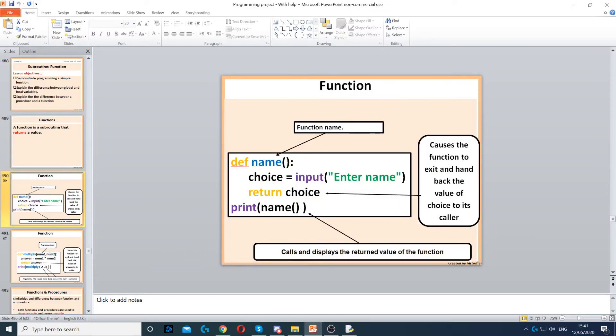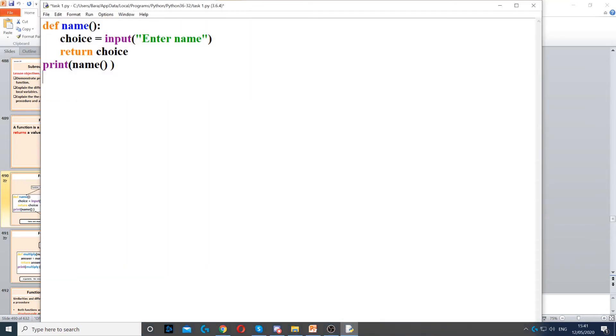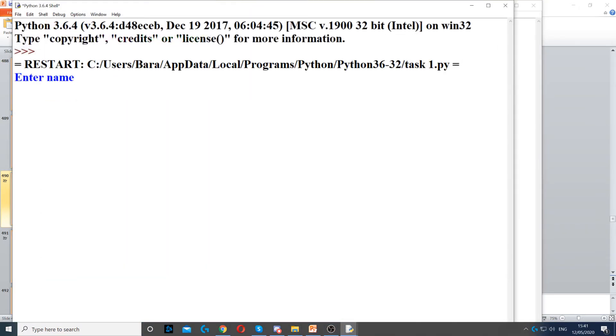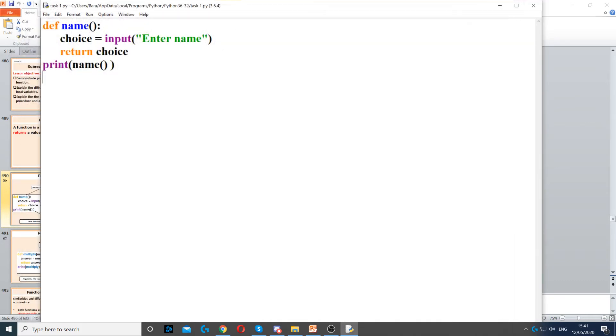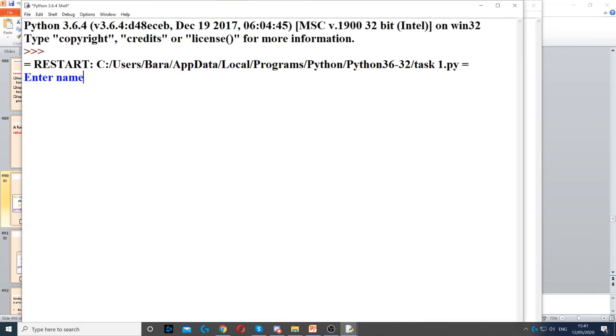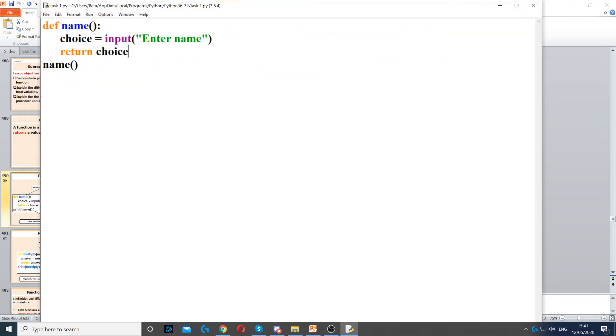If I run that in Python, we can see that it will ask for a name. If I just type anything here, it will display that specific name. Now, if I remove the print command, it will not do anything. It will run the procedure, but the return value will be stored inside the function and the function will end, but will not display anything on the screen.